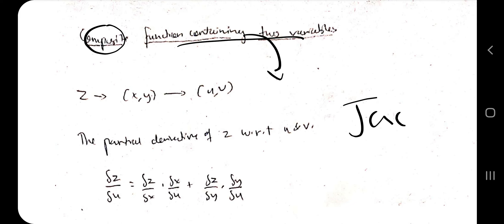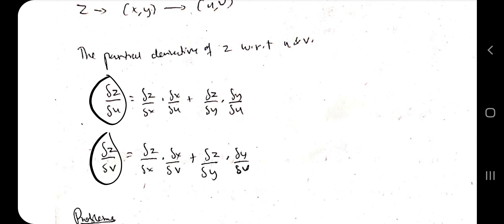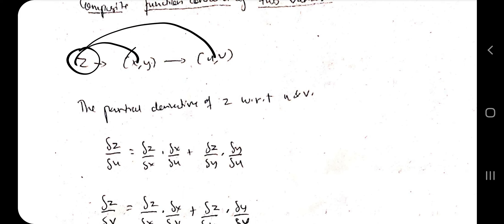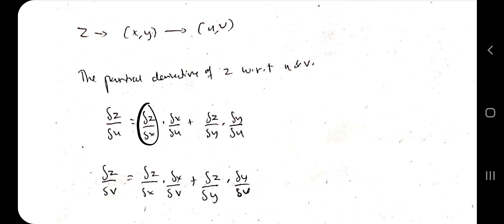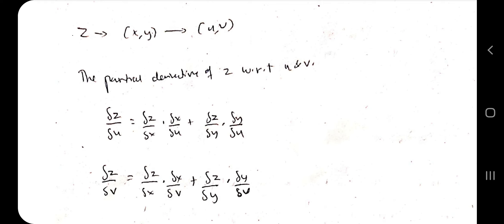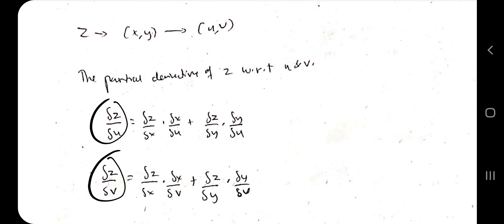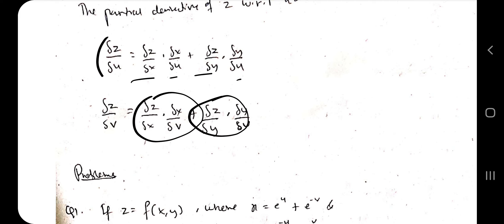The next part is the composite function containing two variables. Here z depends on x and y, and x and y both depend on u and v. The formulas are: ∂z/∂u = (∂z/∂x)·(∂x/∂u) + (∂z/∂y)·(∂y/∂u), and ∂z/∂v = (∂z/∂x)·(∂x/∂v) + (∂z/∂y)·(∂y/∂v). You find the four partial derivative terms and substitute them accordingly.